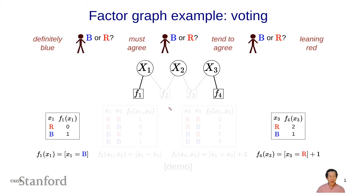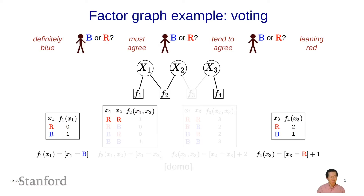Now let's look at the other factors. f2 is going to represent the fact that person one and person two have to agree. I'll look at all possible assignments to the variables in the scope of f2 — x1 and x2 — and assign each a non-negative number. For rr it's 1 (they agree); if they don't agree I return 0; for bb it's also 1 (they agree). More succinctly, I can write f2 as the indicator function of x1 equals x2.